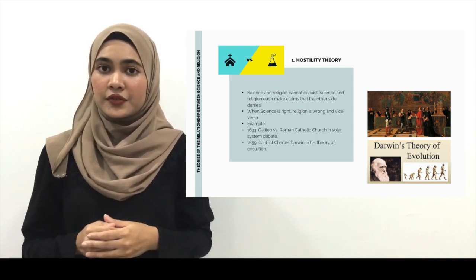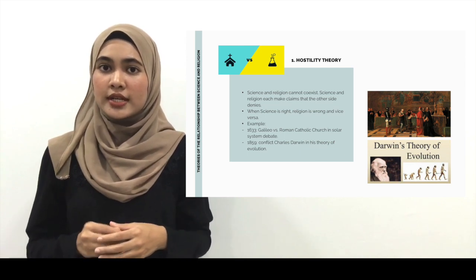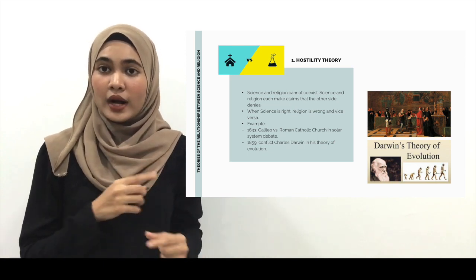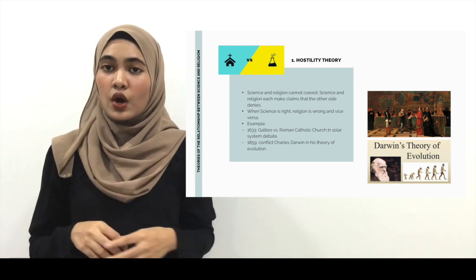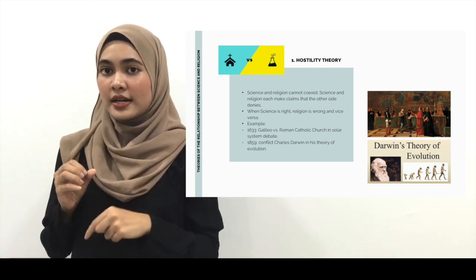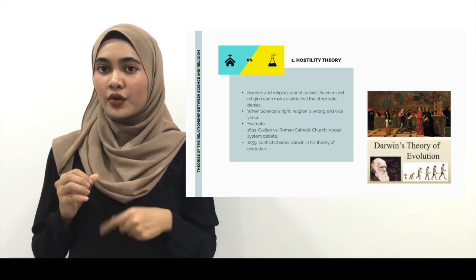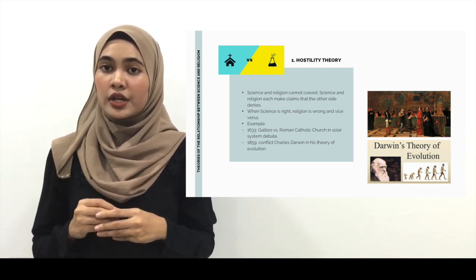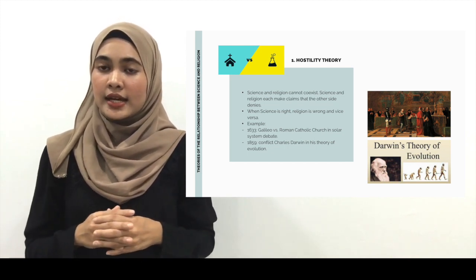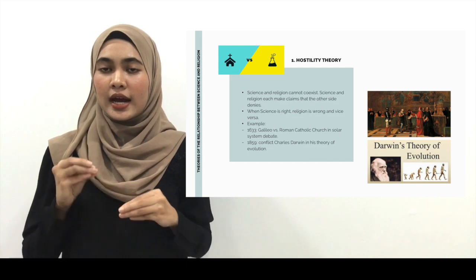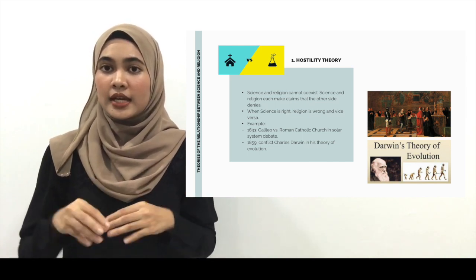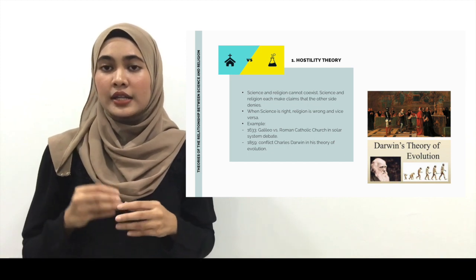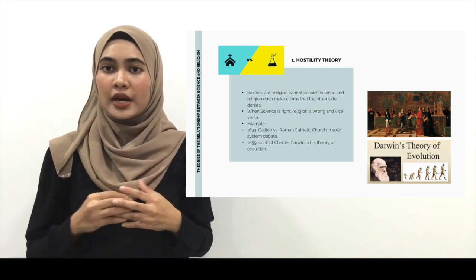As an example, in 1633, Galileo versus the Roman Catholic Church in the solar system debate. Galileo, a scientist, claimed that the sun is static while the earth is moving around the sun. The Church believed that the earth is static and the sun is moving around the earth. In 1859, conflict occurred with Charles Darwin and his theory of evolution. Darwin, a scientist, claimed that humans evolved from monkeys. While religious belief is that humans are created by God.